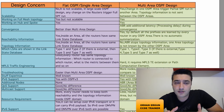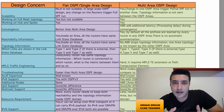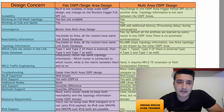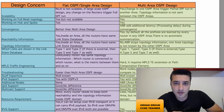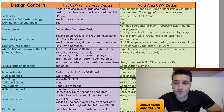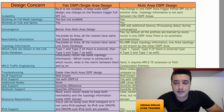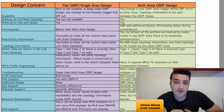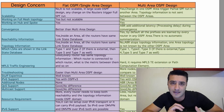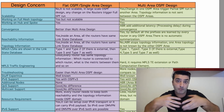Hello guys, today I'll talk about single-area versus multi-area OSPF design. OSPF is a routing protocol with two levels of hierarchy: we have the backbone area (Area 0) and non-backbone areas. When talking about single-area, I'm referring to the backbone area, and in multi-area design we have both backbone and non-backbone areas.